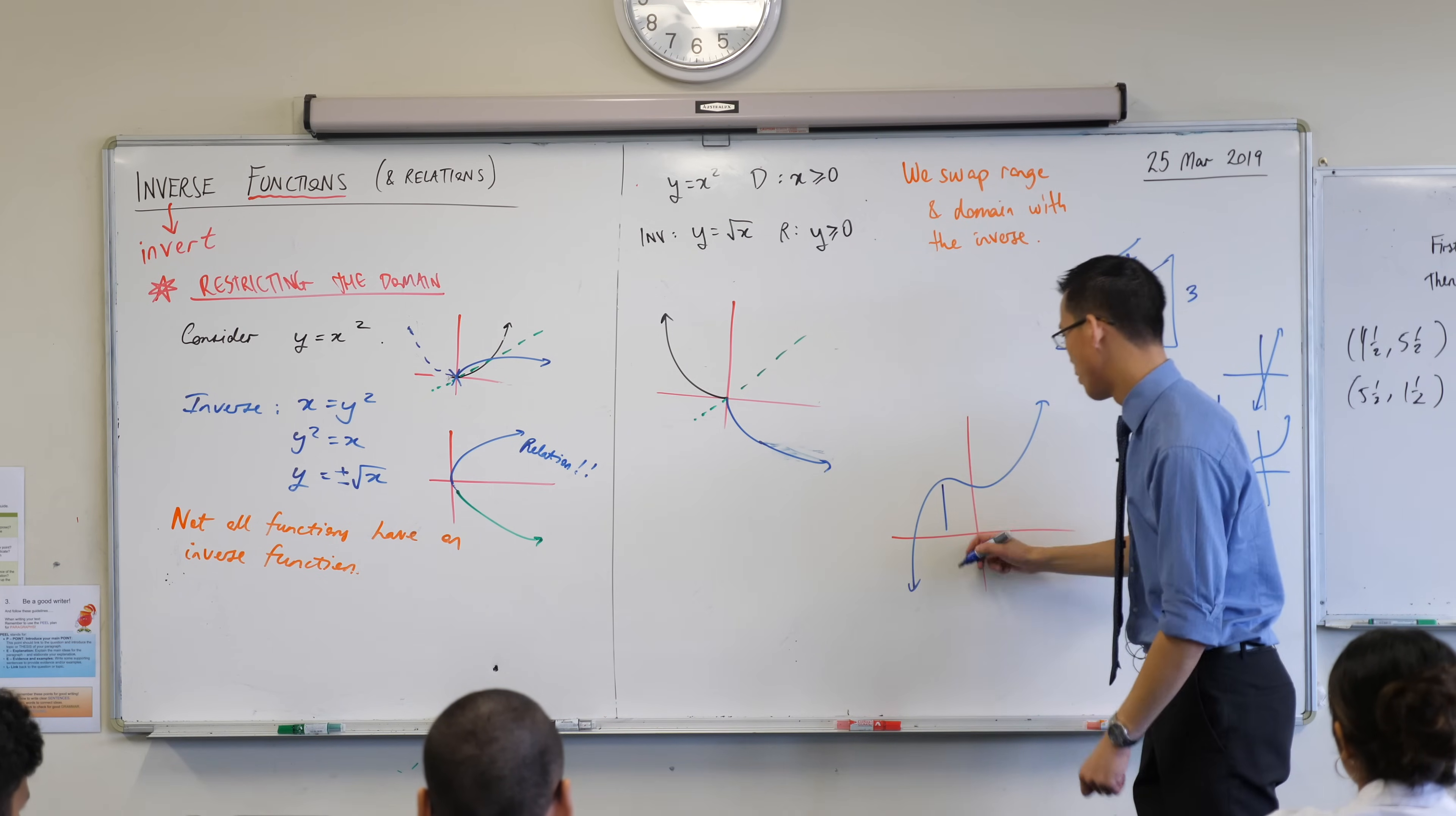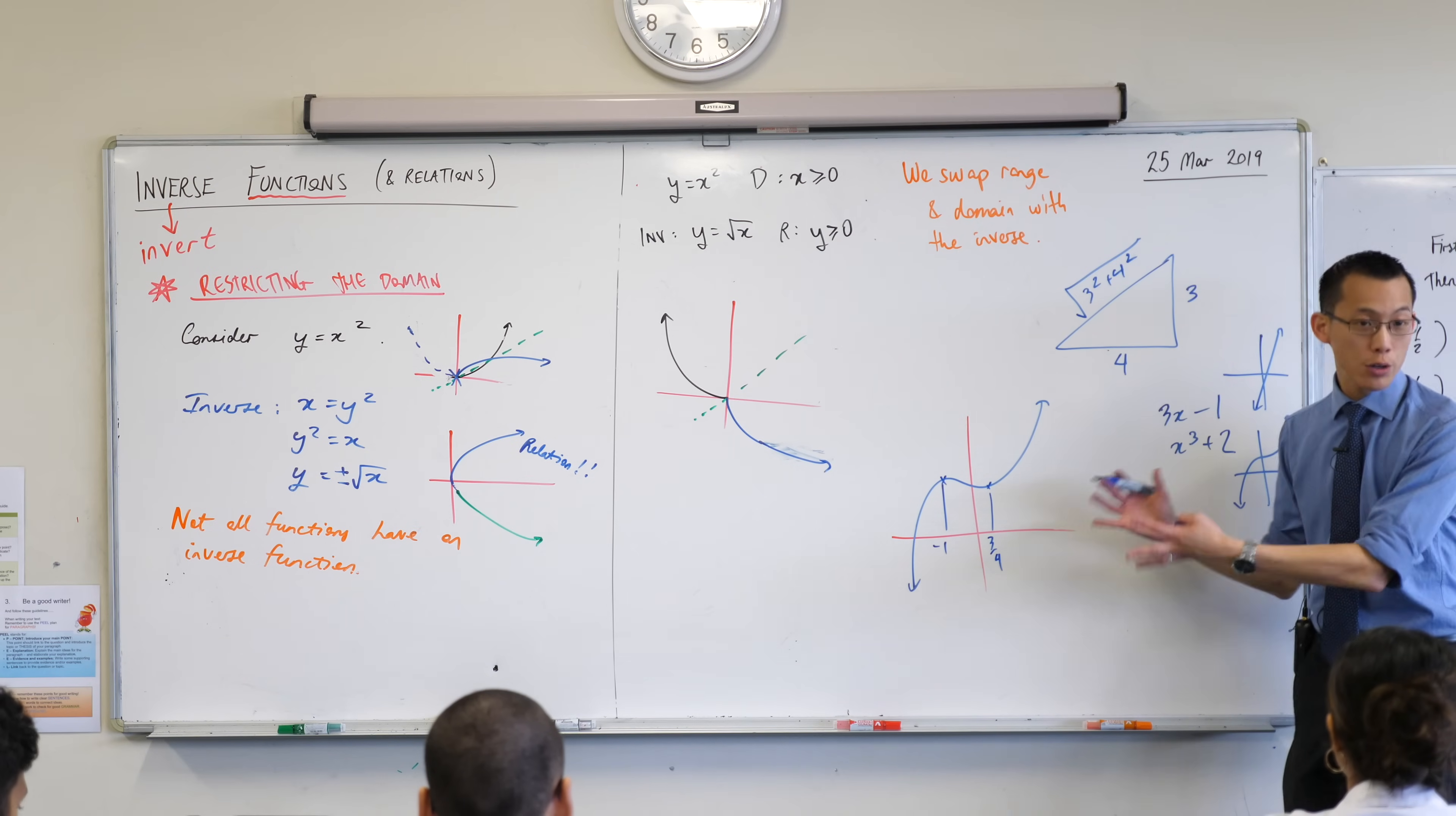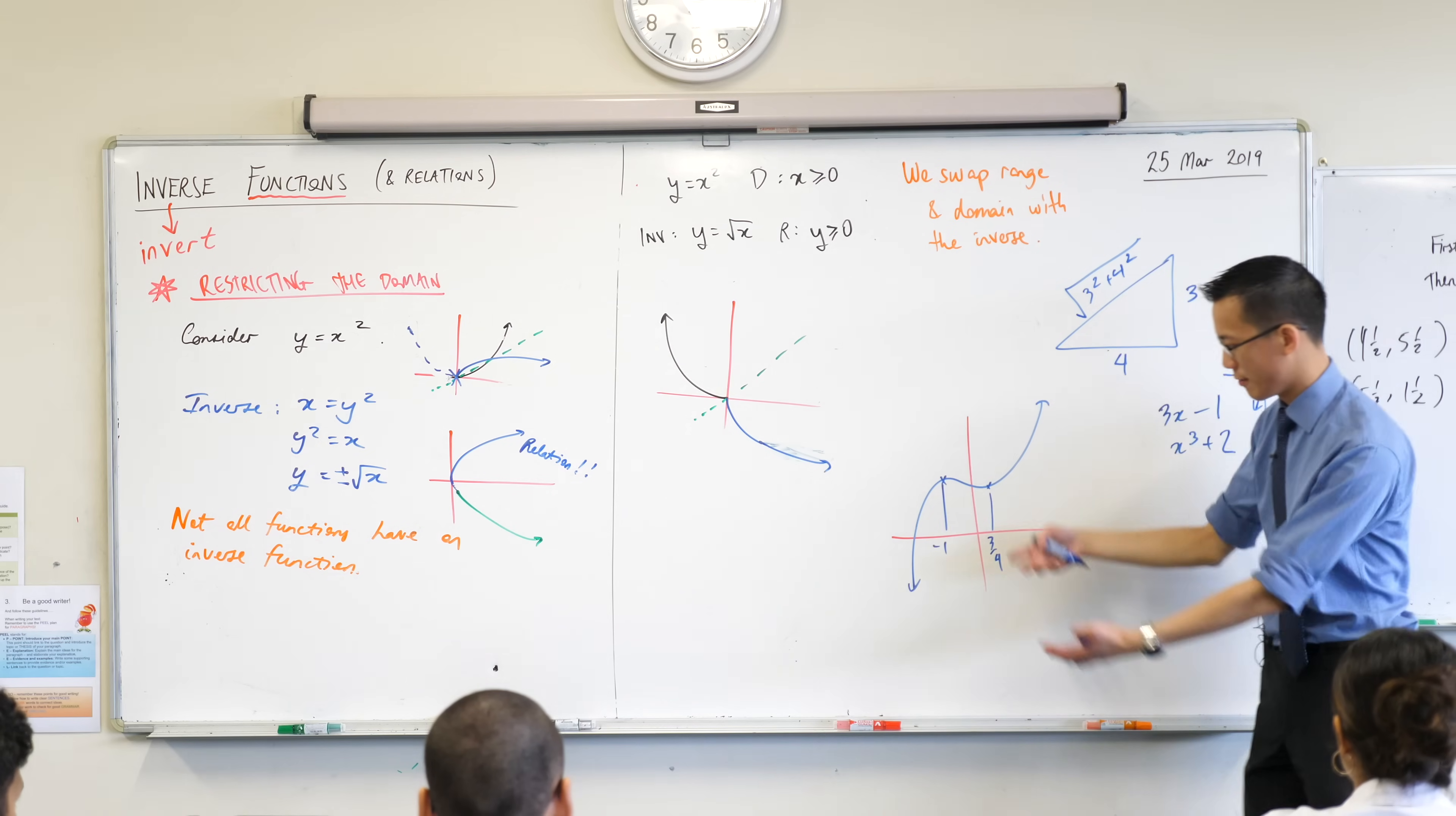So if, for example, let's call this, let's just give it a value. Let's call that negative one, right there. And let's call this, I don't know, that looks like three quarters or something like that.